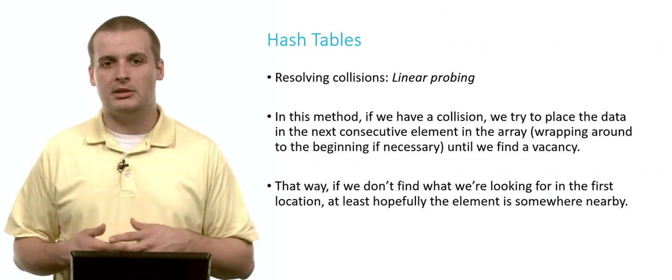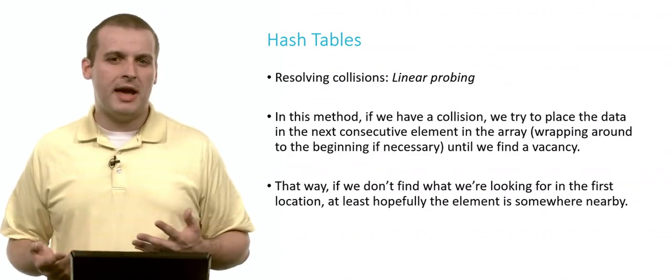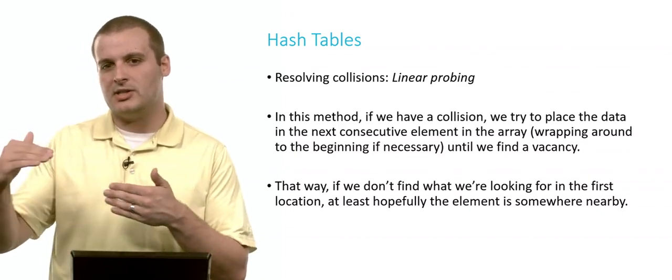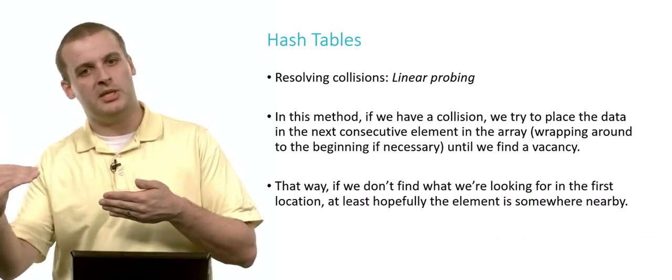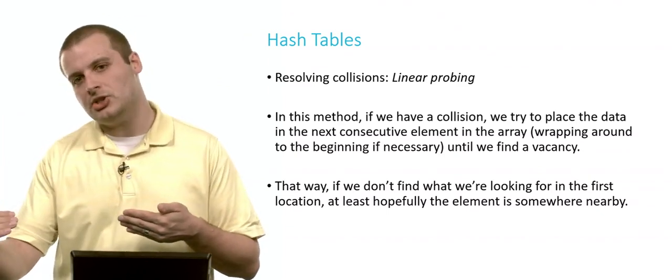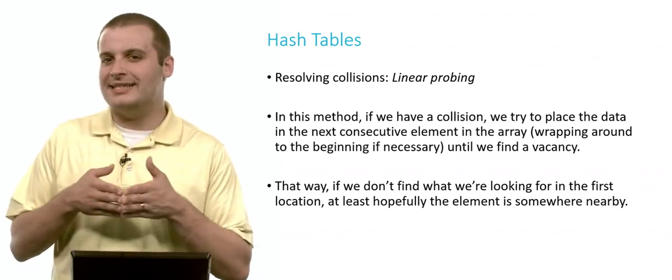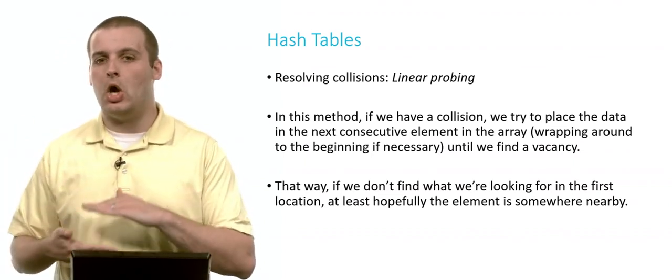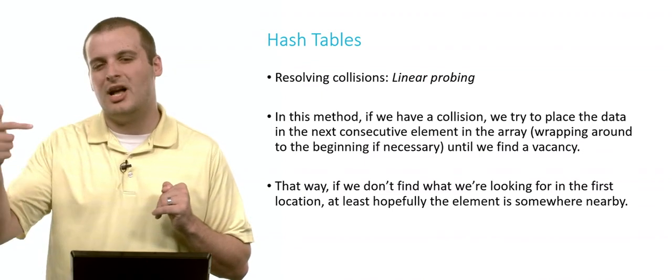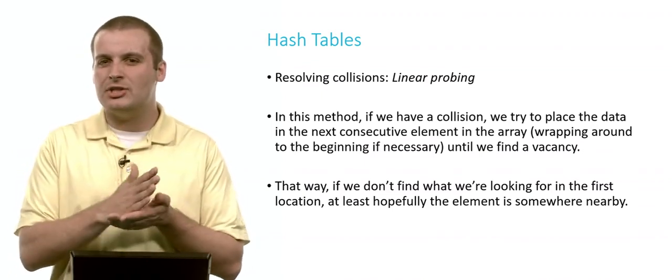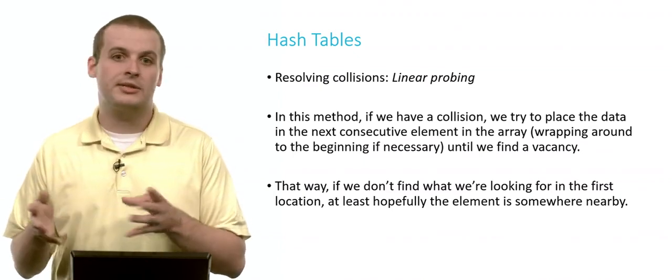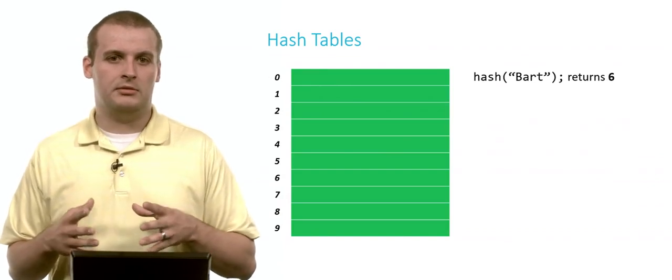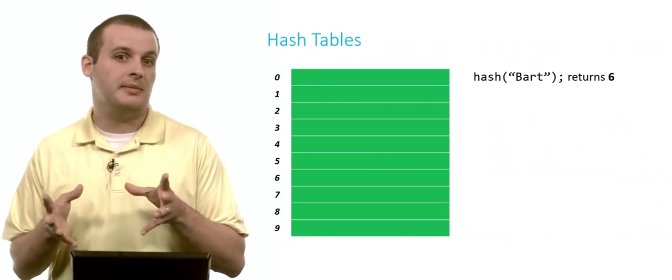One way to deal with it is to do something called linear probing. Using this method, if we have a collision, what do we do? Well, if we can't put him in array location 6 or whatever hash code was generated, let's put him at hash code plus 1. And if that's full, let's put him in hash code plus 2. The benefit of this being, if he's not exactly where we think he is, and we have to start searching, maybe we don't have to go too far. Maybe we don't have to search all n elements of the hash table. Maybe we only have to search a couple of them.